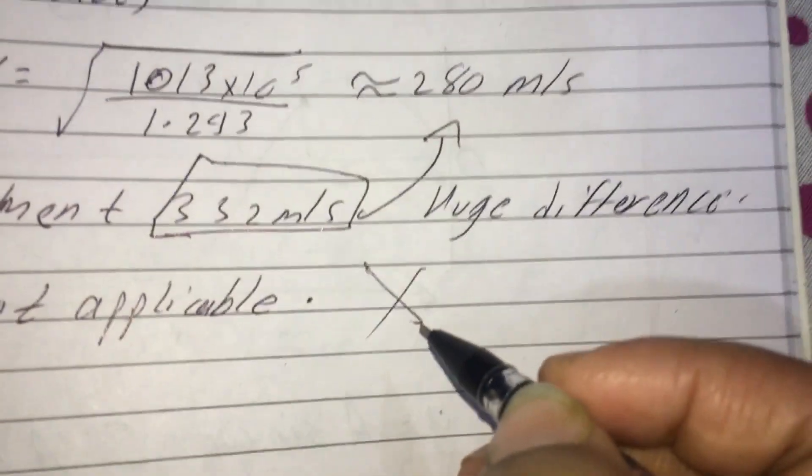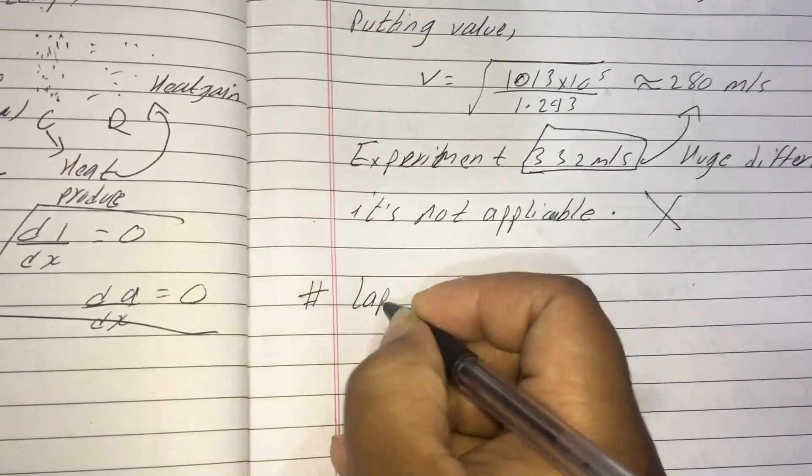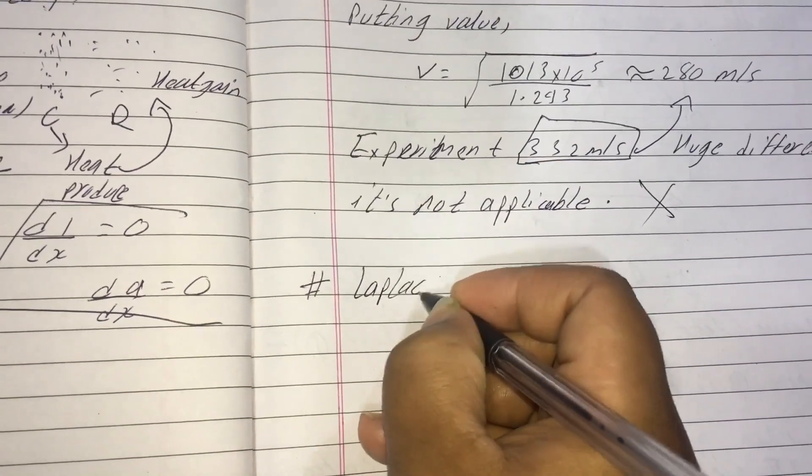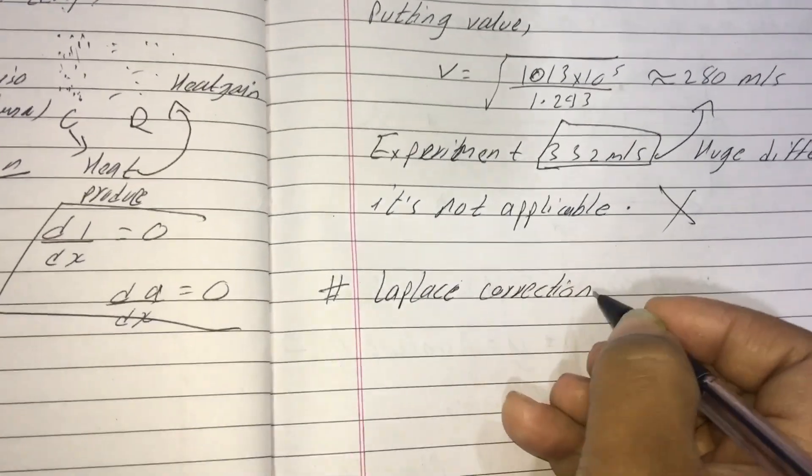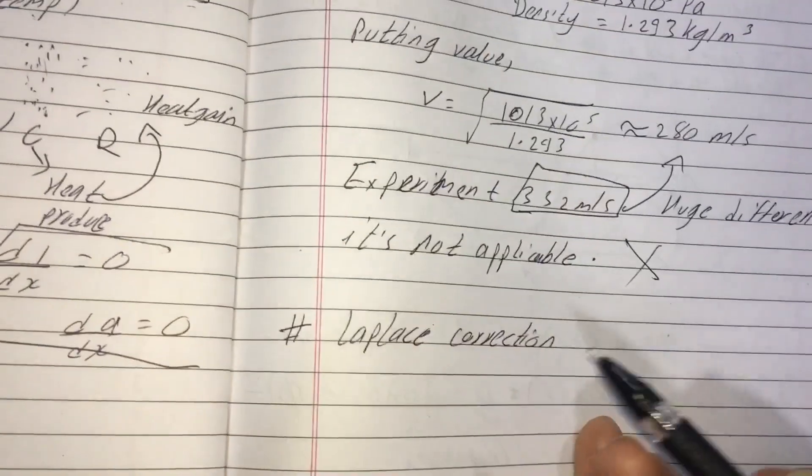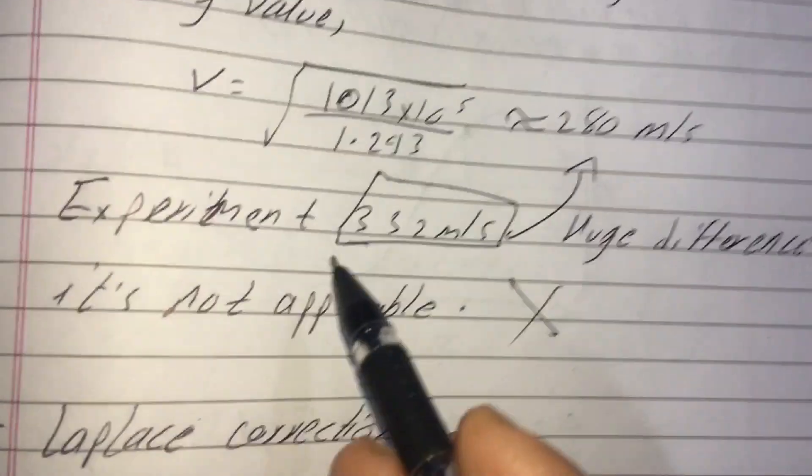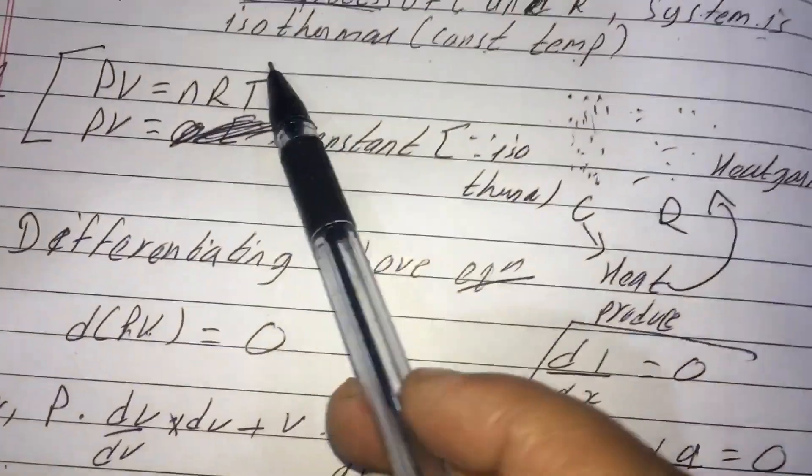Newton's formula is not applicable. So this is where Laplace correction comes in. Laplace said it's approximately 332. Which is slow process? Rapid process. Isothermal? No, it's adiabatic.